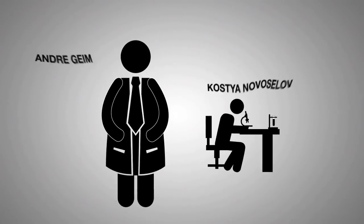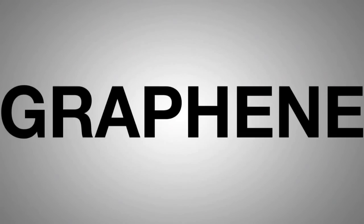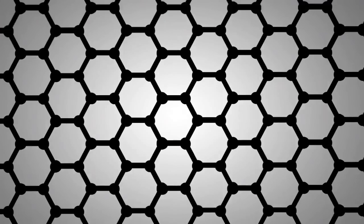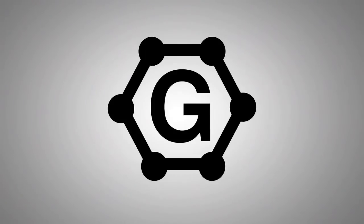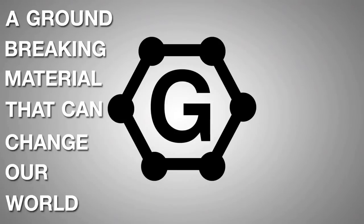In 2004, two Russian scientists used scotch tape and a graphite rock to discover graphene, a layer of atoms arranged in a honeycomb structure. Thanks to this discovery, the world was introduced to a groundbreaking material that can change our world. Here's why.